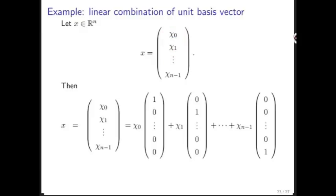But notice that you can also write that as the linear combination of the unit basis vectors. It's chi 0 times the first unit basis vector plus chi 1 times the second unit basis vector and so forth. We summarize that here.